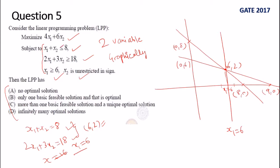The first says x₁ + x₂ ≤ 8. This is the line x₁ + x₂ = 8, so the less than or equal to will be either this side or this side. How to decide which side is the region less than equal to 8?